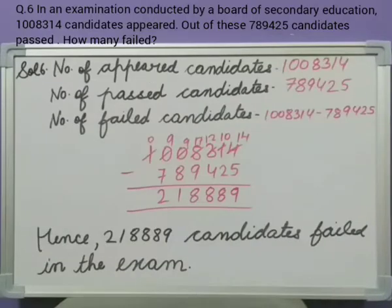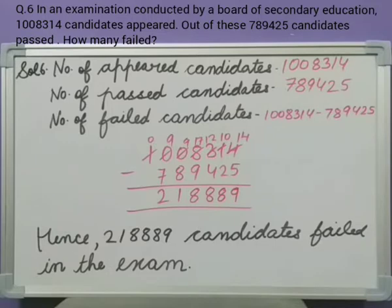Question number 6. In an examination conducted by a board of secondary education, 10,08,314 candidates appeared. Out of these, 7,89,425 candidates passed. How many failed?